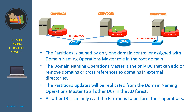Let's now learn about the Domain Naming Operations Master. In an Active Directory forest, the partition is owned by only one domain controller assigned with the Domain Naming Operations Master role in the root domain. The Domain Naming Operations Master is the only DC that can add or remove domains or cross references to domains in external directories. The partition updates will be replicated from the Domain Naming Operations Master to all other DCs in the forest. All other DCs can only read the partitions to perform their operations.